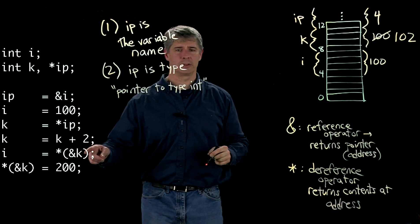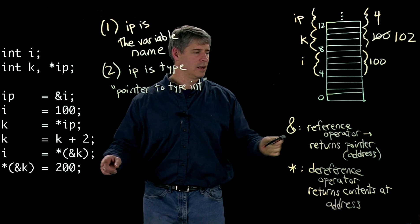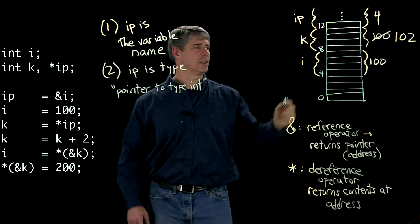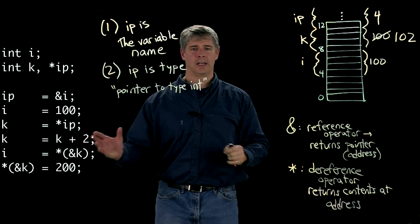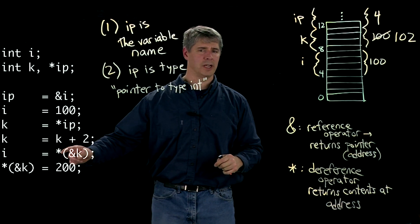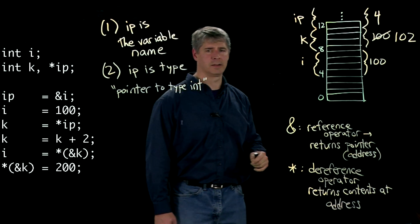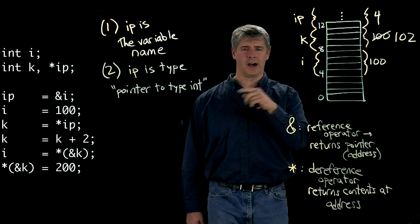And the next line, what we're doing here is we're taking the address of k. We're referencing it. So the address of k is 8. That's what's happening in the parentheses. And then after that, we're taking the contents at 8. And we're setting i equal to that.